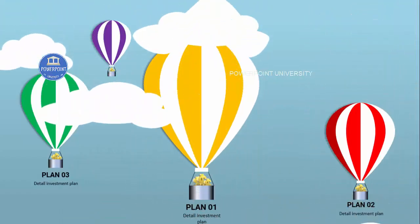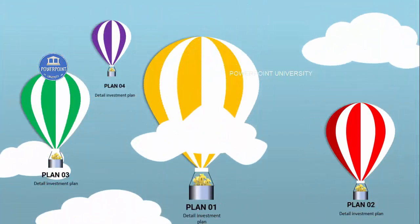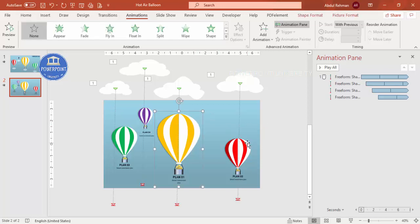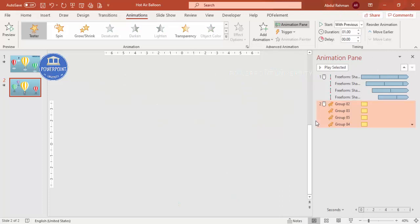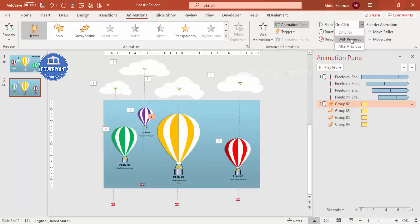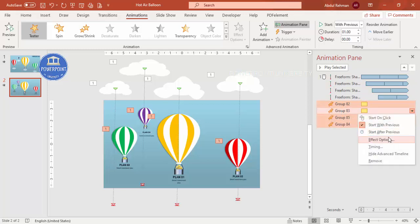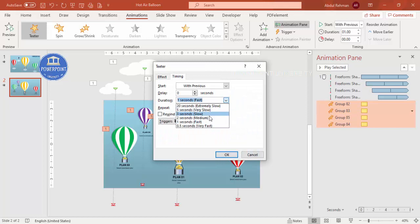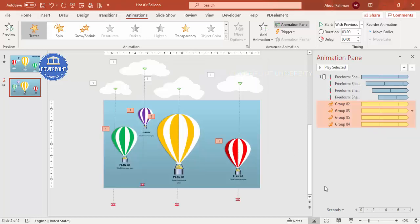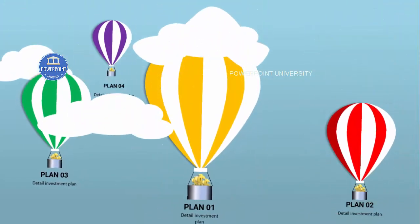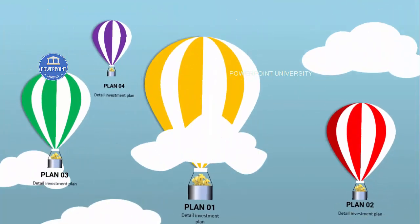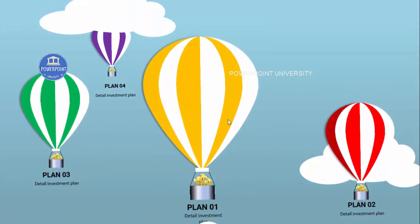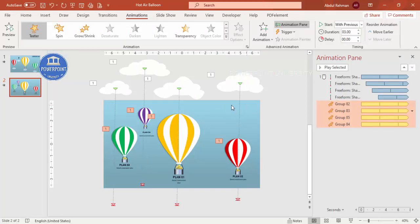Playing the animation, the clouds move downward continuously, creating the effect of the balloons flying higher. To avoid the slide looking stationary, select all the balloon groups and add a Teeter animation under Emphasis. Set it to With Previous, make it Slow, and set Repeat to Until End of Slide. Now the balloons gently sway while the clouds move — this is the simplest way to create an investment plan slide. You can add a title at the top to complete it.